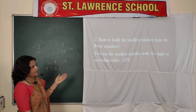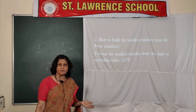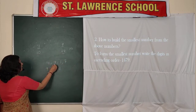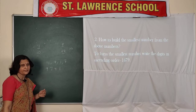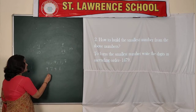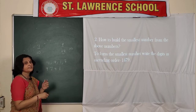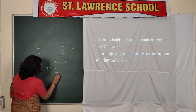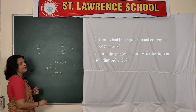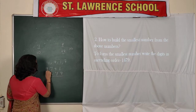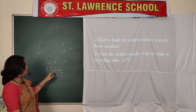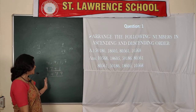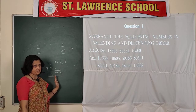Now how do you frame the smallest number from the same digits of 4917? You have to arrange the digits in increasing order — just the opposite. Write 1 first, then 4, then 7, and then 9. So 1479 is the smallest number and 9741 is the greatest number. Largest number uses decreasing order; smallest number uses increasing order.